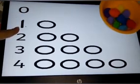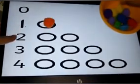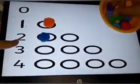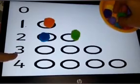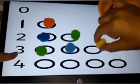This is 1. I am picking 1 pom pom. 2. 1, 2 pom poms. 3. 1, 2, 3 pom poms.